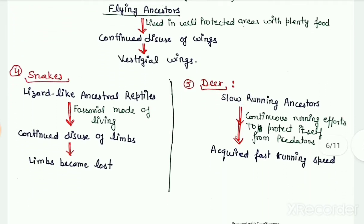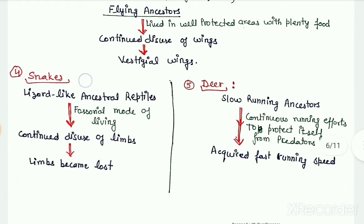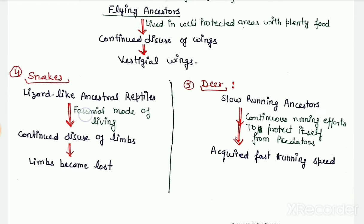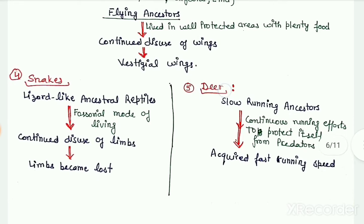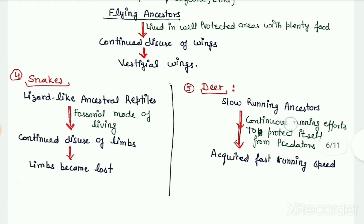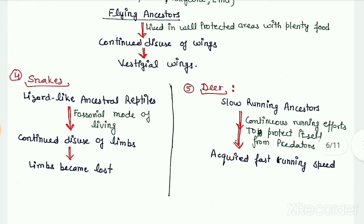Other evidences of Lamarckism include the absence of limbs in snakes due to their fossorial mode of living, and the presence of a fast running ability in deer due to their continuous efforts to protect themselves from predators.